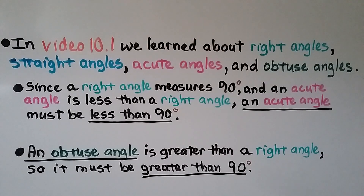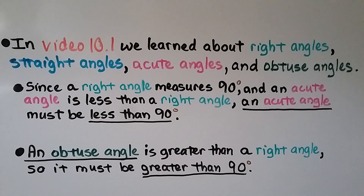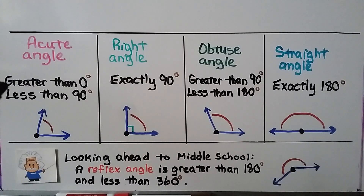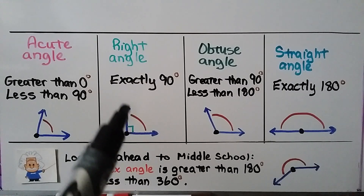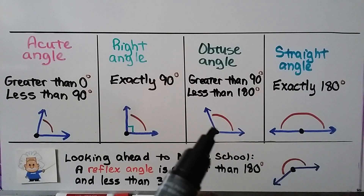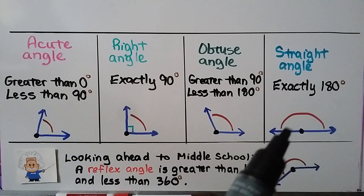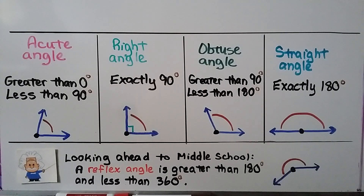In video 10.1, linked in the description, we learned about right angles, straight angles, acute angles, and obtuse angles. Since a right angle measures 90 degrees, and an acute angle is less than a right angle, an acute angle must be less than 90 degrees. An obtuse angle is greater than a right angle, so it must be greater than 90 degrees. An acute angle is greater than 0 and less than 90 degrees; a right angle is exactly 90 degrees; an obtuse angle is greater than 90 but less than 180 degrees; and a straight angle is exactly 180 degrees.